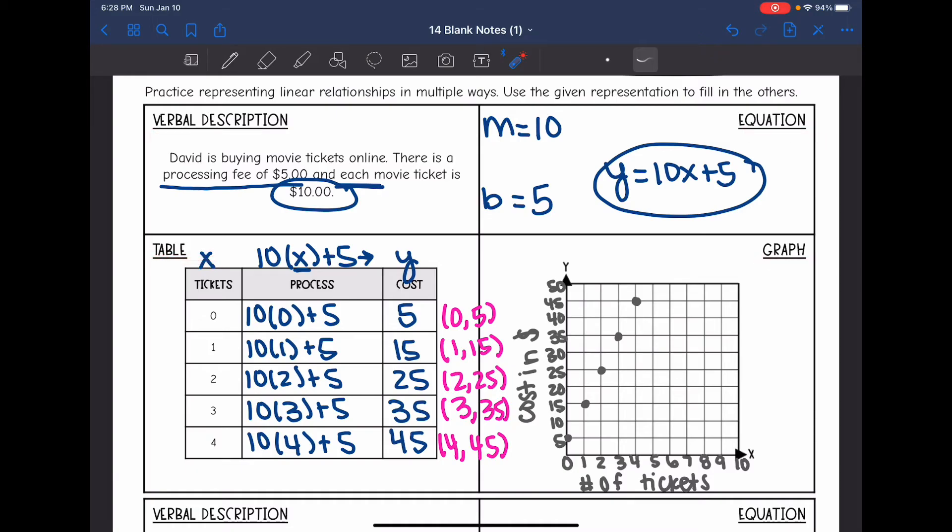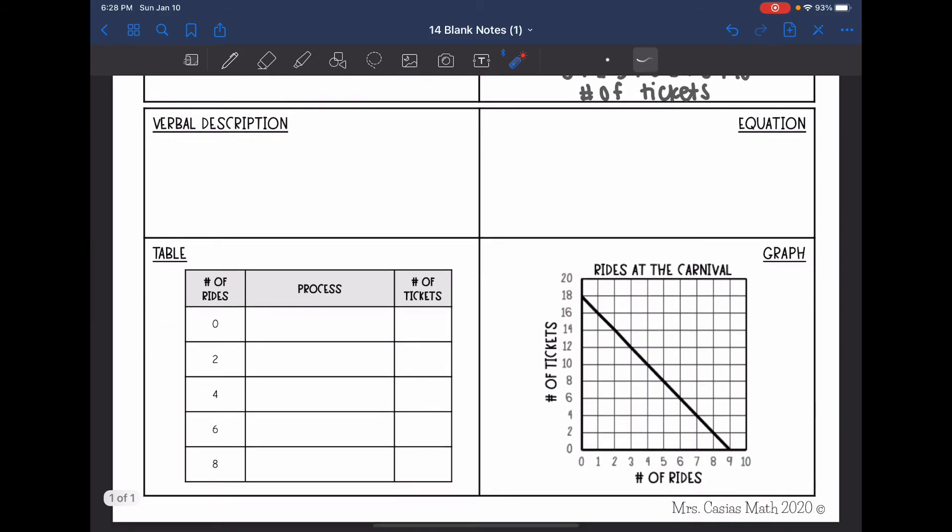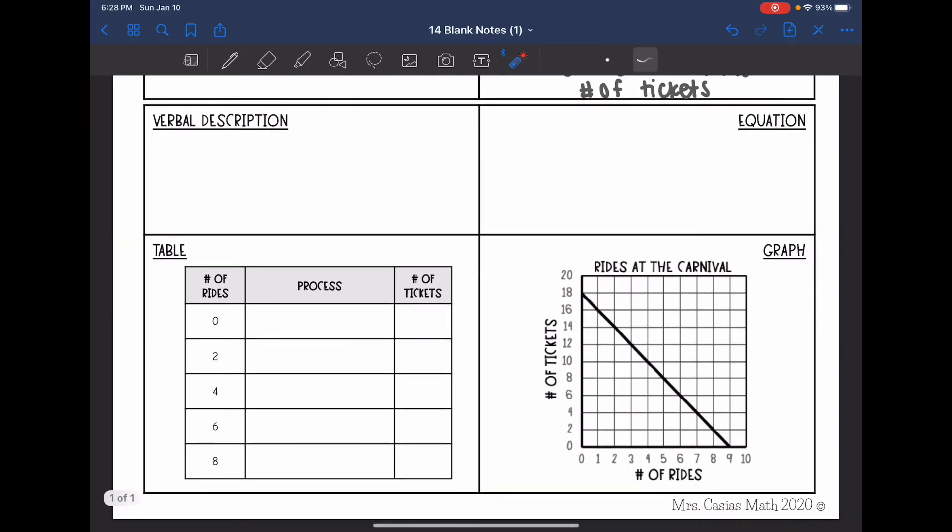They all show that the slope or each ticket cost is $10 and our y-intercept or processing fee is $5. Okay, let's look at this next one. This time they gave us the graph. Let's look at the graph and start by identifying the slope and the y-intercept and think about what it means in this situation.